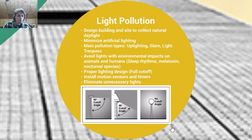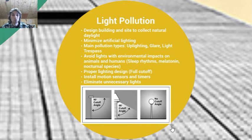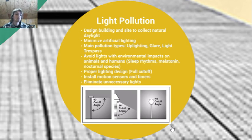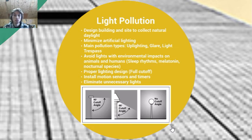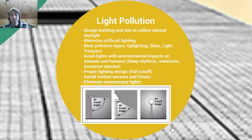Finally, light pollution. It doesn't seem like a big problem, but it actually can be. It has an effect on humans and our sleep cycles and circadian rhythms, as well as animal circadian rhythms and nocturnal species. To minimize light pollution, we first want to minimize artificial lighting and design the building and site to collect as much natural daylight as possible. Think about building a more curved and circular building rather than square, because it collects daylight better. The design of windows, window sills, and interior paint all have a profound effect on daylighting. There are three light pollution types: uplighting, glare, and trespass.